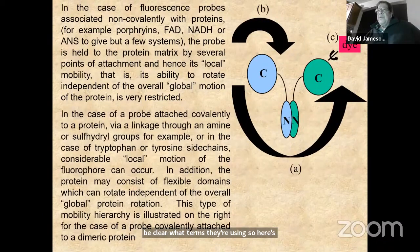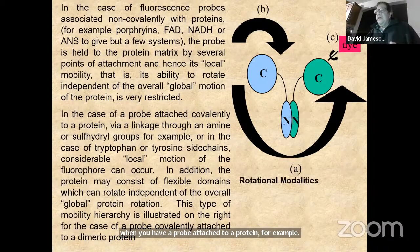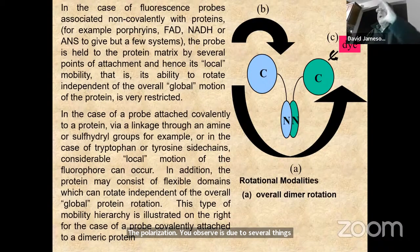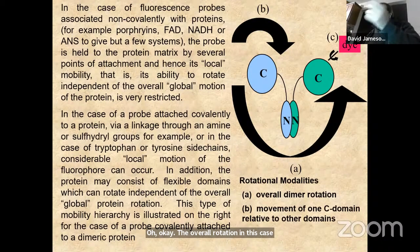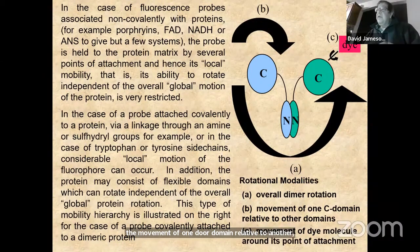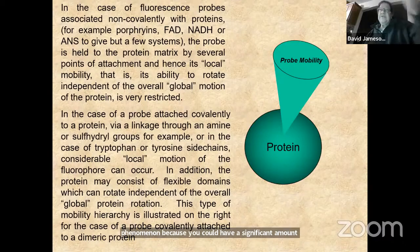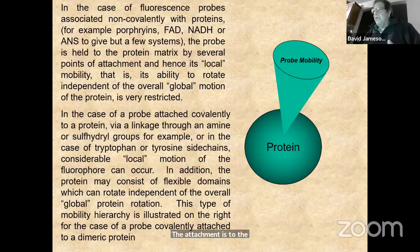When you have a probe attached to a protein, the polarization you observe is due to several things: the overall rotation of the molecule (in this case a dimer), the movement of one domain relative to another, and the movement of the fluorophore around its point of attachment. This can be an important phenomenon because you can have significant probe mobility depending on how the attachment is made to the protein.